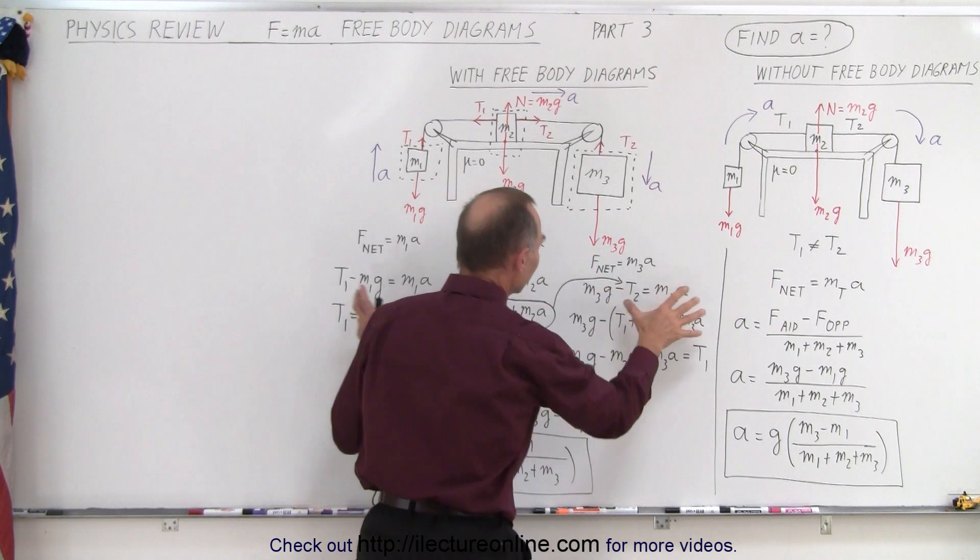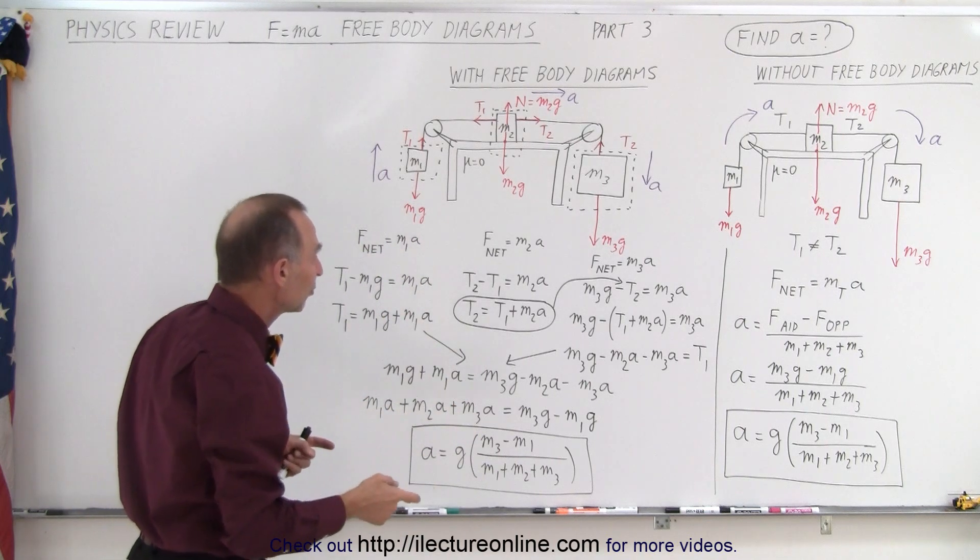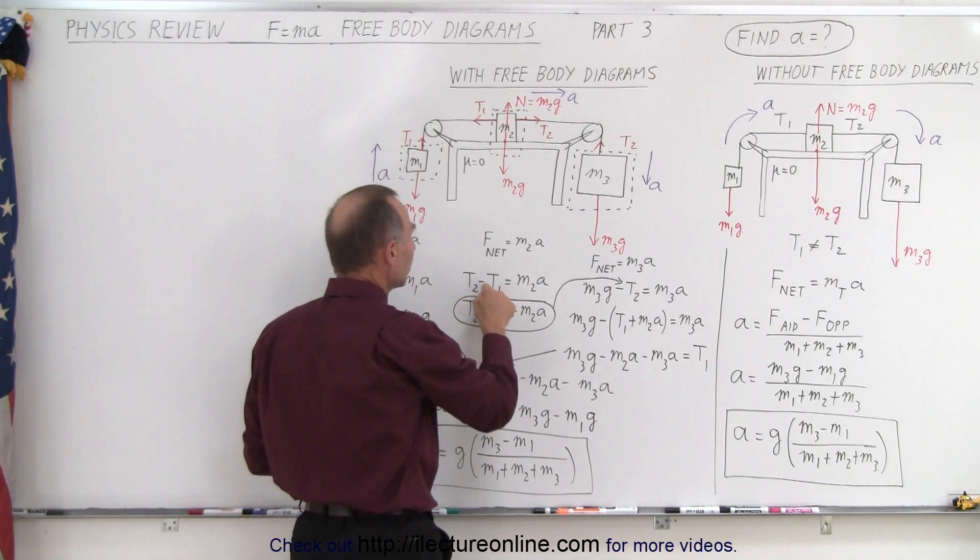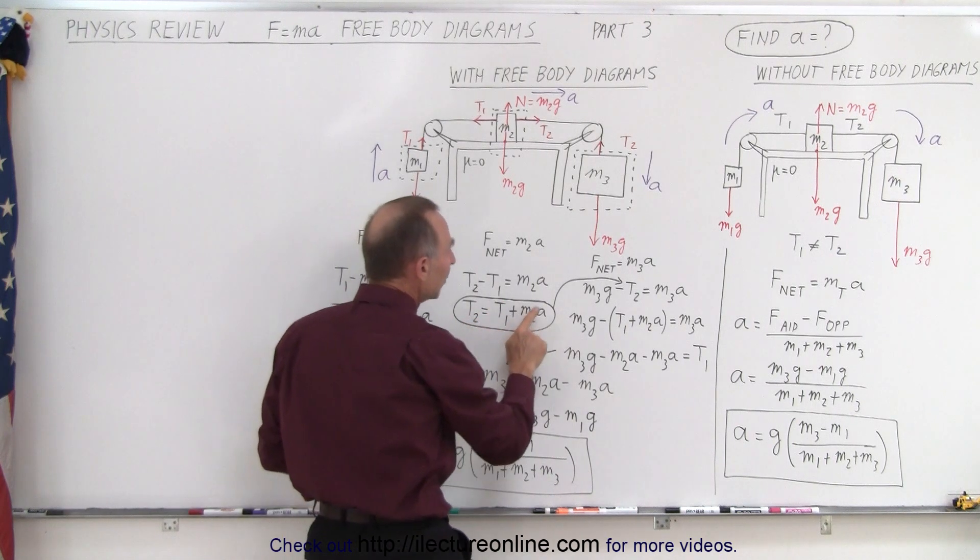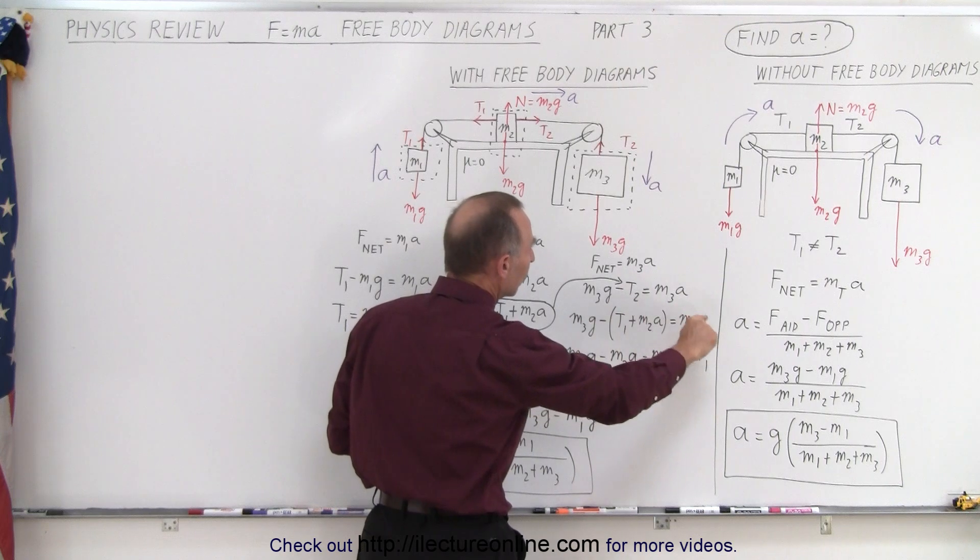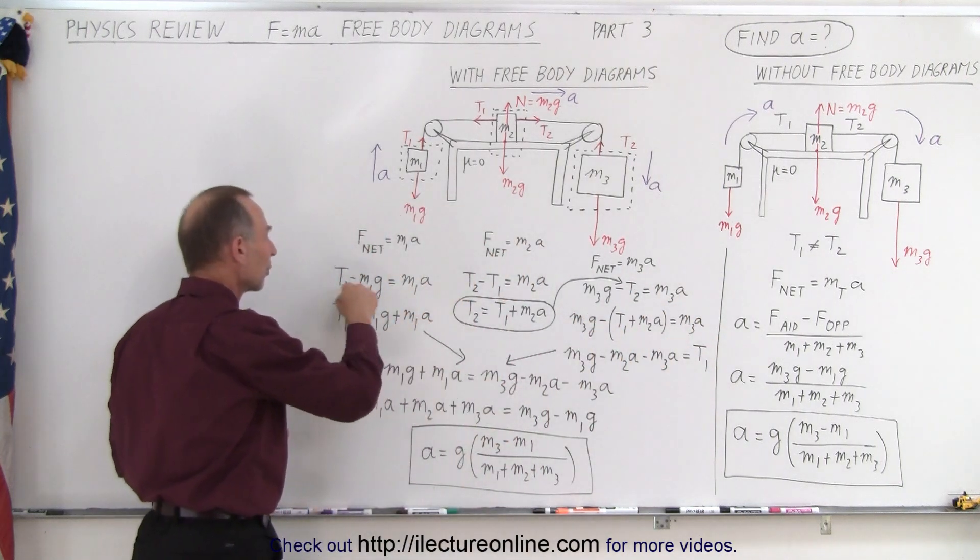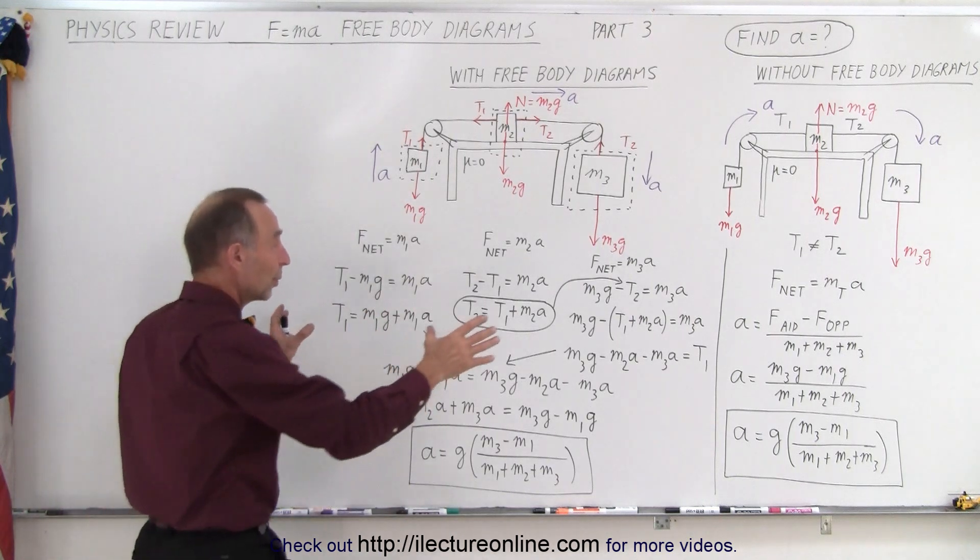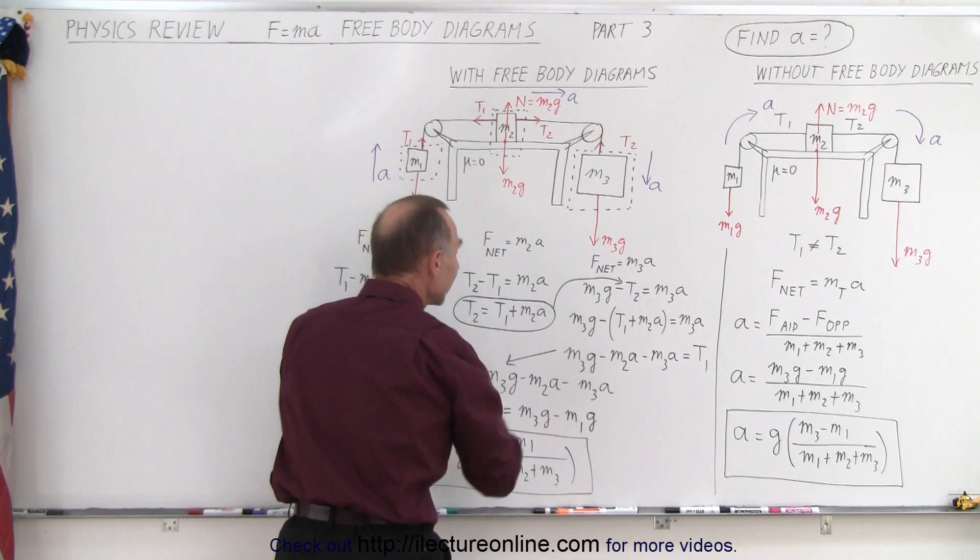So here we have these three equations. What do we do with them? Well, the first thing we can do is solve this equation for one of the two unknowns. We did T2 equals T1 plus M2A. And then we substitute that into this equation to eliminate T2. And now we have an equation here that only has T1 in it. And then looking over here, we have another equation that only has T1 in it. So now we have these two equations, both of them with T1.